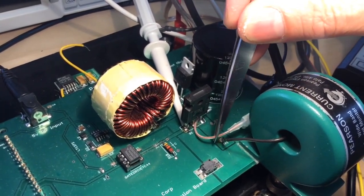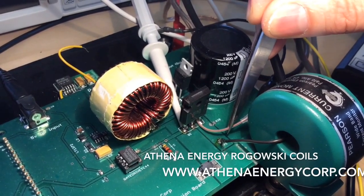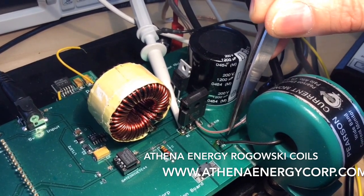Inserting the Rogowski coil even this far, about 10% of the length, is going to still give you about 1% accuracy in current measurement.